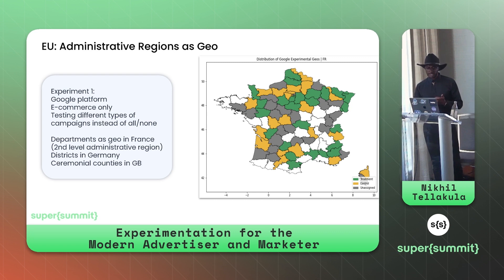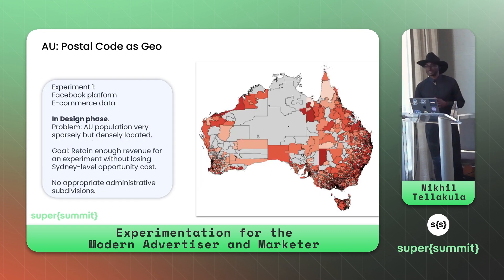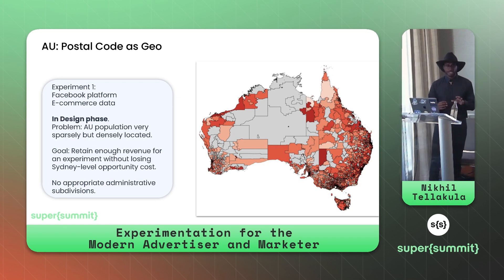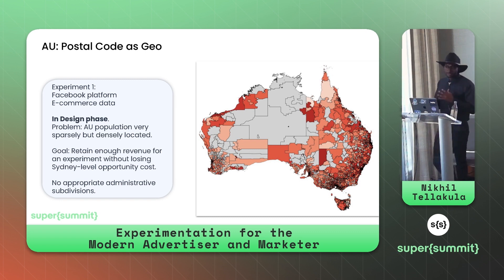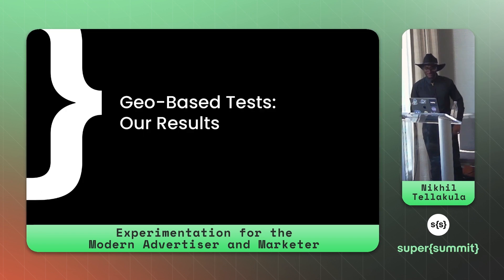Clients include Asics and Mercedes — formerly Merkle & Partners, an agency. For Australia, we're using postal codes as geo for Asics. Like Japan, Australia has very dense population centers — Perth, Melbourne, Sydney, Brisbane — so there's data processing needed to handle exclusions while still incorporating enough revenue to get actionable insights. We didn't find an appropriate administrative subdivision given Australia only has around five states, so postal codes are the approach and this experiment is currently in the design phase.